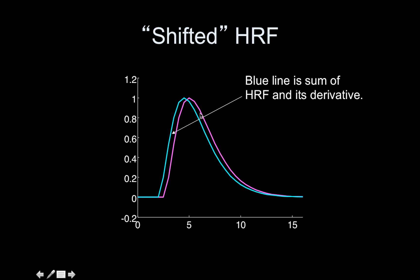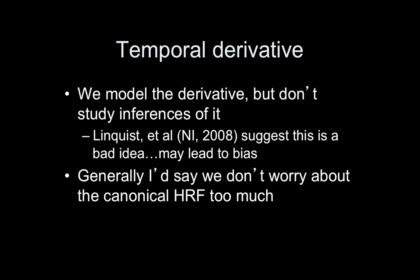You can shift the HRF forward or backward using the derivative. This allows you to shift your HRF a tiny bit, so if your assumption about when activation onset occurred for a stimulus is slightly off — because the activation in part of the brain might not be immediate, or the hemodynamics are different — the derivative can adjust for those small differences. That's why we often add derivatives of regressors. We model the derivative but don't draw inferences from it; we put it in as a nuisance to soak up extra variability. Lindquist and others in a 2008 NeuroImage paper suggested this could lead to bias, but generally we don't worry about it too much.